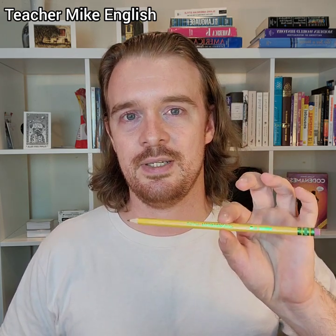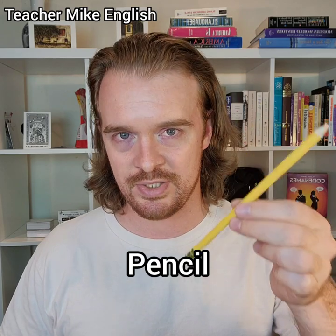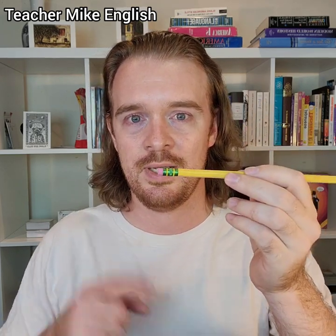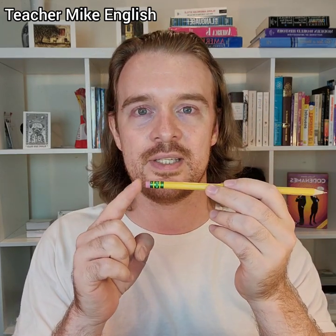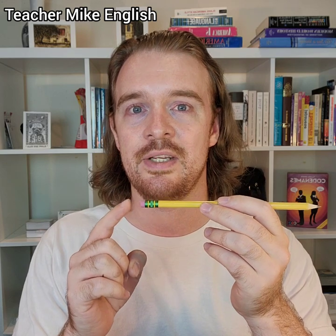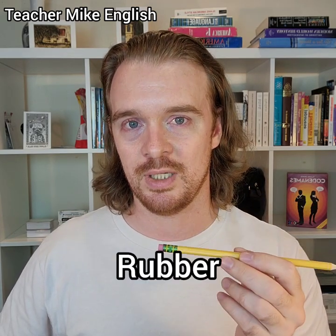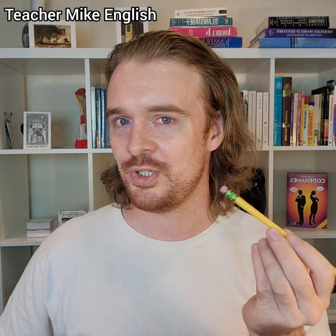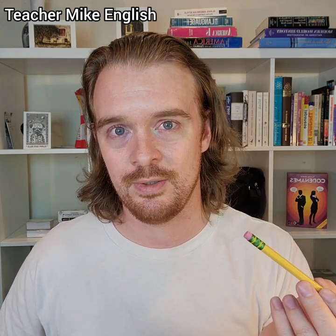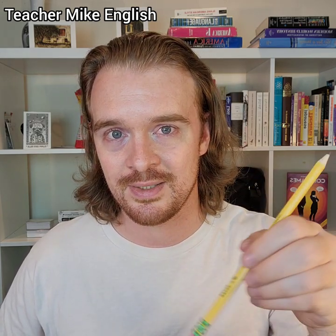Let's start with the very basic items first. This is a pencil, and the pencil has this on the end. This is called an eraser, but British people call it a rubber. What do you do with an eraser? You erase. And this thing is also called an eraser or a rubber.